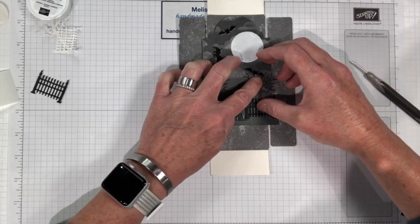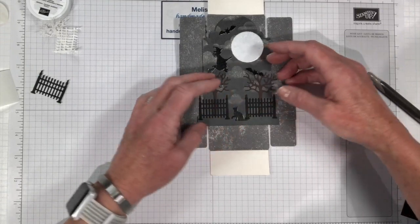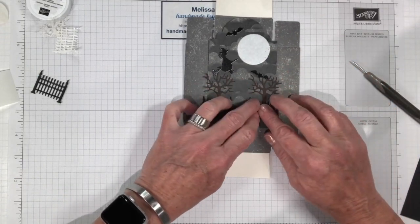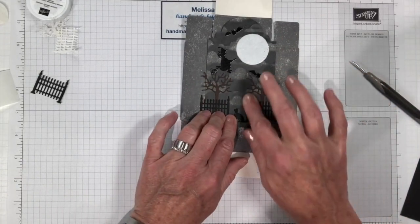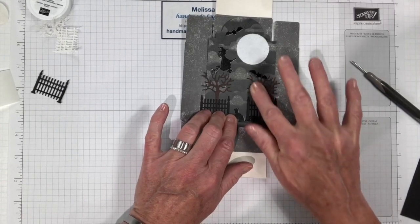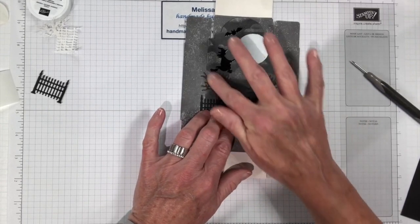We've got our little gate. Our tree. There we go. It looks like he's going to kind of cover that bat, but that's okay. The bat's in the background. Press that down. Just give it a little burnish. And then that adhesive will stick really, really well.